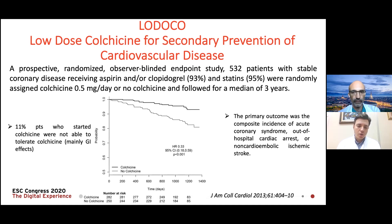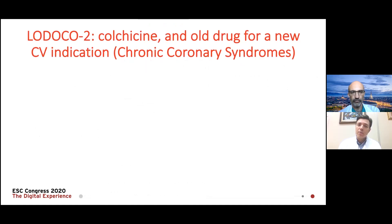To summarize, colchicine makes sense as a non-specific anti-inflammatory drug to be tested in coronary artery disease. The LODOCO1 trial was a relatively small trial including around 500 patients and was done years ago. Now we have the LODOCO2 trial. Could you tell us more about the design of LODOCO2 and the main results?